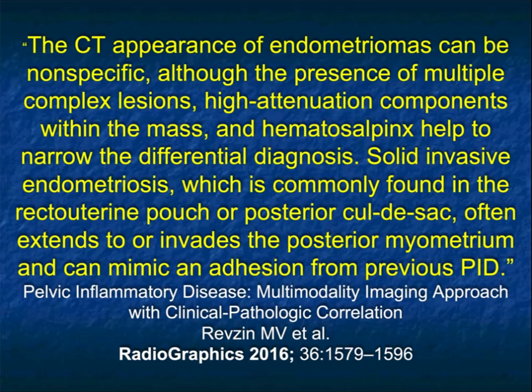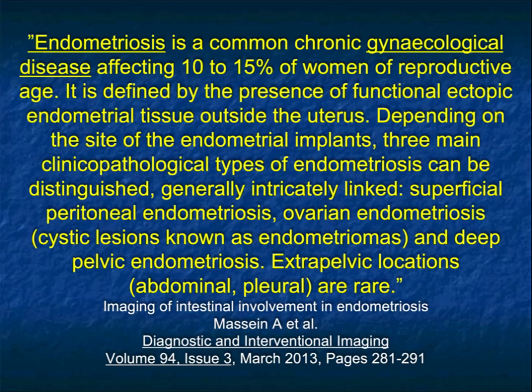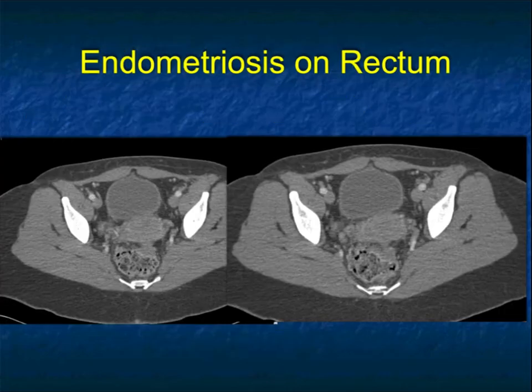The appearance of endometriomas can be nonspecific, although the presence of multiple complex lesions, high attenuation components within the mass, and hematosalpinx help to narrow the differential diagnosis. Solid invasive endometriosis, commonly found in the recto-uterine pouch or posterior cul-de-sac, often extends to or invades the posterior myometrium and can mimic an adhesion from PID or malignancy. Most of the time on CT, you're not going to see a lot, particularly when there are small endometriomas, but there are a number of unusual presentations.